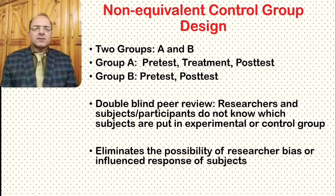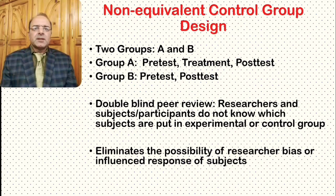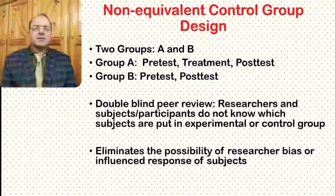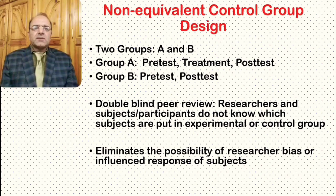For example, with two similar classes, A and B: Class A is given a pre-test measuring academic achievement in a particular subject, then taught in a particular way, then given a post-test. Class B is given only the pre-test and post-test. This serves as an example of the non-equivalent control group design.